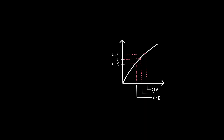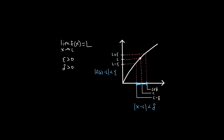Now the formal definition of a limit might sound intimidating at first, but don't worry, it's actually pretty simple. It goes like this: the limit of a function f(x) as x approaches a value c is L, if for every positive number epsilon, there exists a positive number delta such that if the distance between x and c — i.e. the absolute value of x minus c — is less than delta, then the distance between f(x) and L — i.e. the absolute value of f(x) minus L — is less than epsilon.